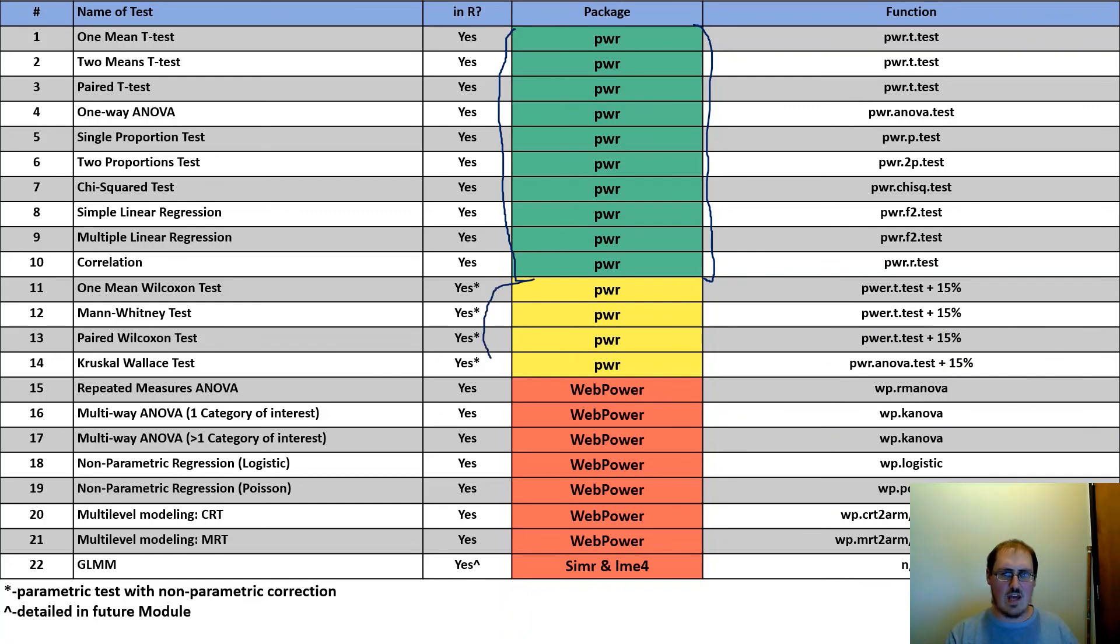Then I have yellow, which there really isn't a test normally, but you can modify and use tests from the earlier package and just tweak it a little bit. And then finally, I'll be walking through red, which are more difficult tests. They take a lot more kind of work to either set up or go through.